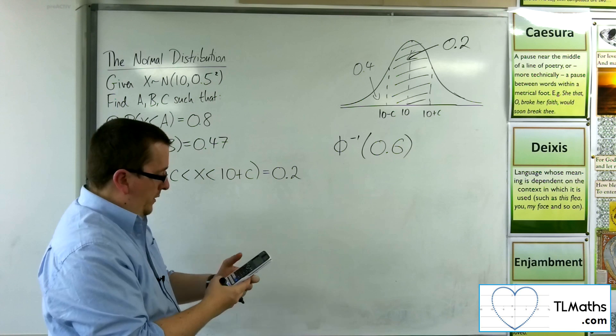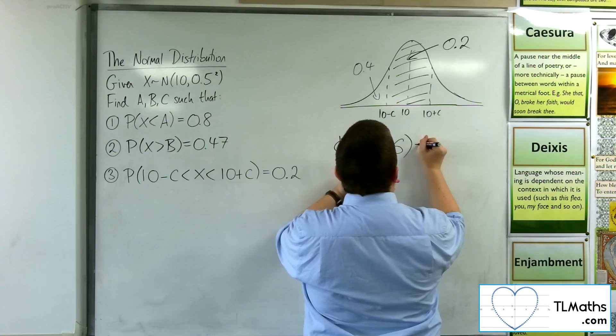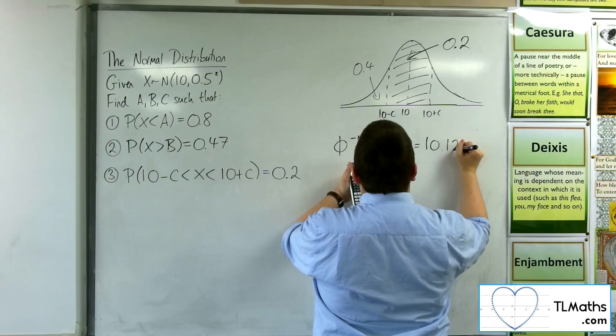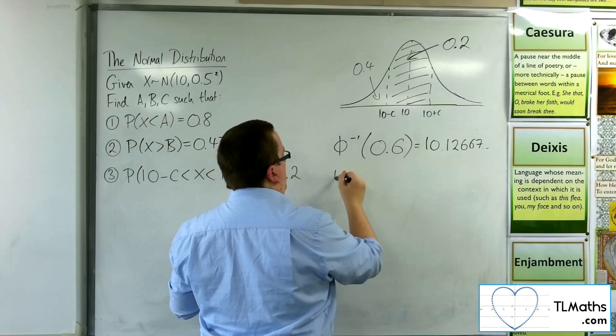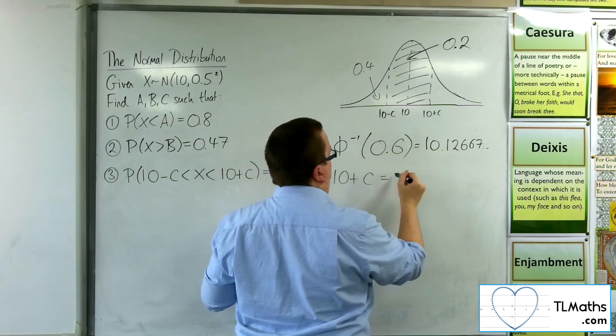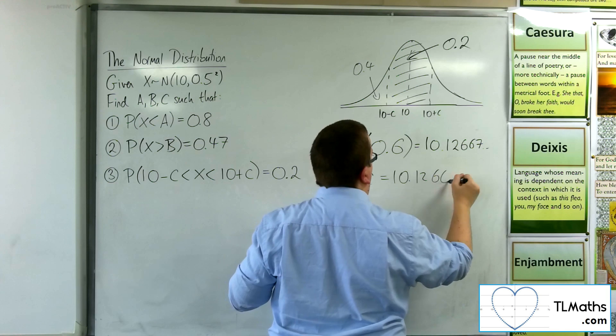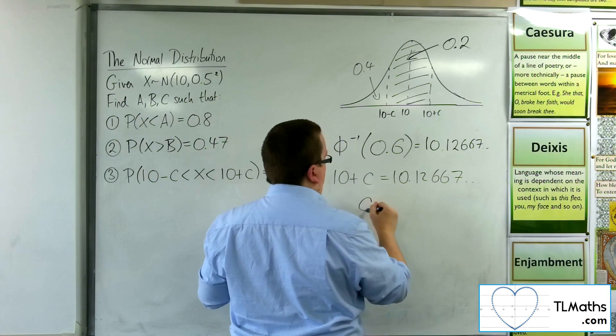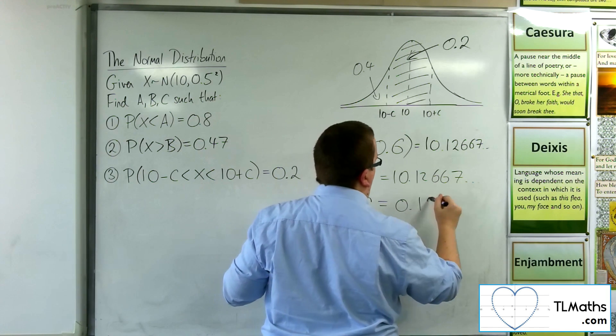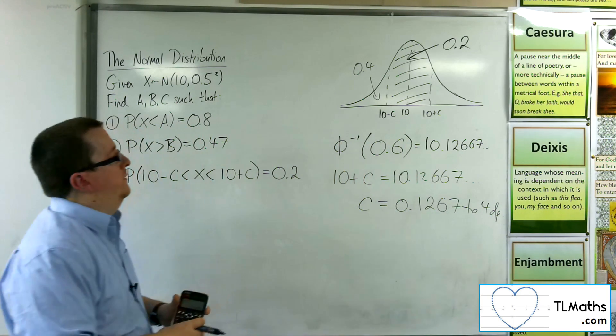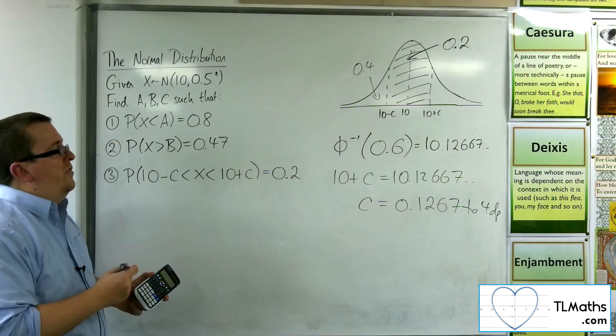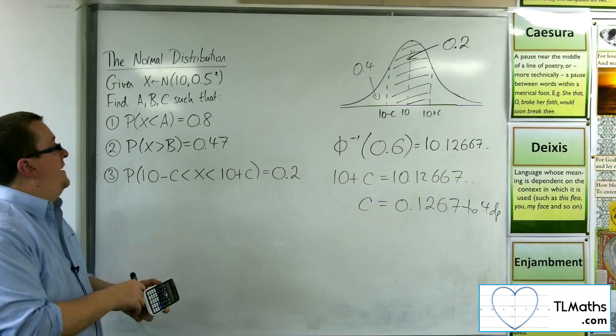So 0.6, and we get 10.12667, etc. So 10 plus c must be the 10.12667, and so c must be 0.1267 to four decimal places. And that is how we can find the a, b, and the c in these three problems.